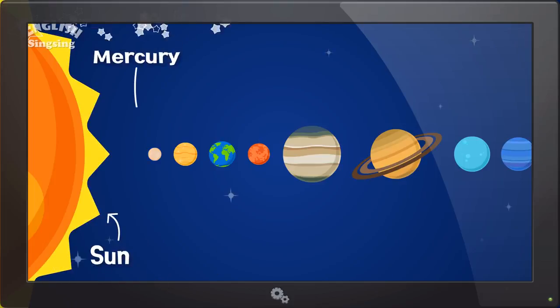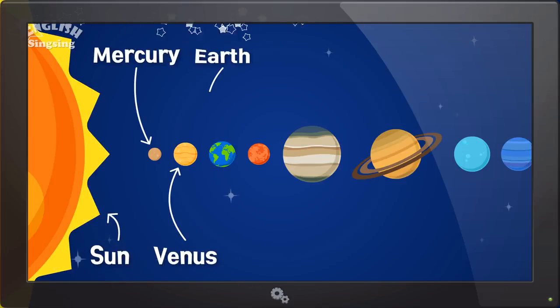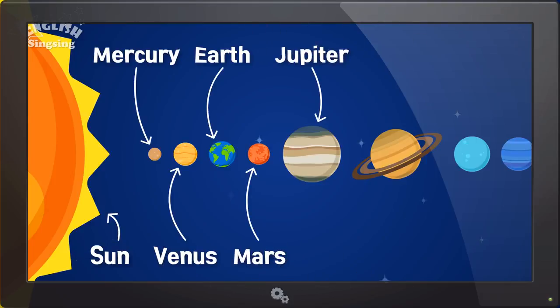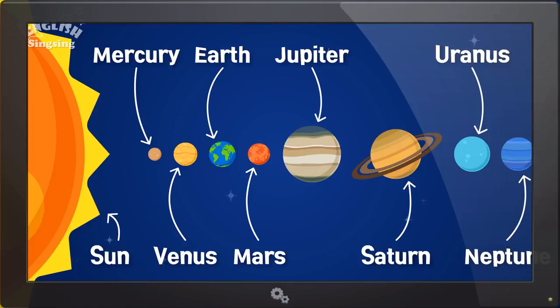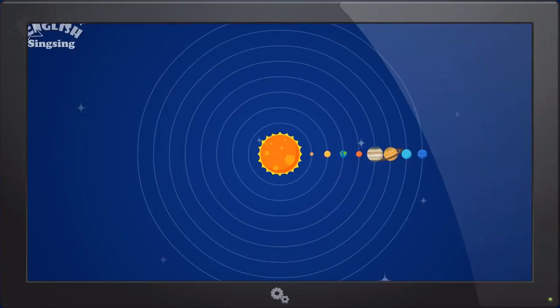Sun, Mercury, Venus, Earth, Mars, Jupiter, Saturn, Uranus, Neptune. This is our solar system.